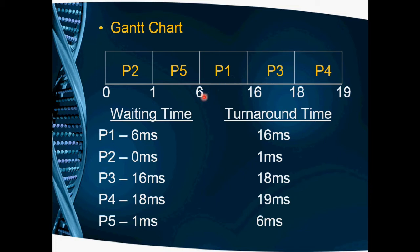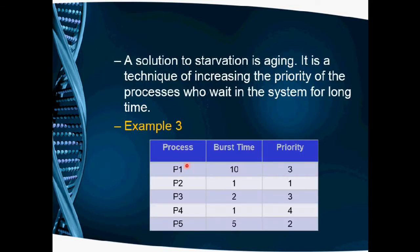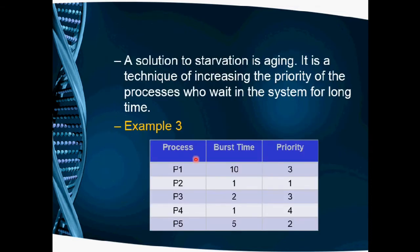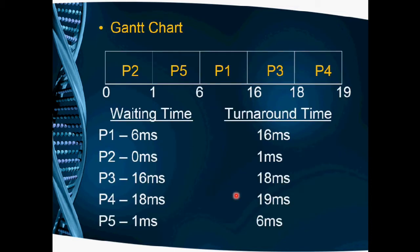P1 is the next process. P1 starts at 6 milliseconds with a burst time of 10 milliseconds, so 6 plus 10 equals 16. P1 executes from 6 to 16 milliseconds. Next is P3, which starts at 16 milliseconds with a burst time of 2 milliseconds, executing from 16 to 18 milliseconds.